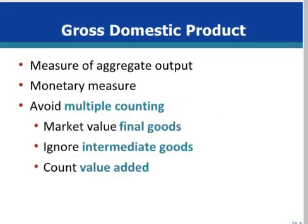The primary measure of the economy's performance as a whole is its aggregate output. This is most commonly calculated as gross domestic product, or GDP. GDP is a monetary measure in that everything is valued in dollars. All goods and services produced must be converted into dollar values for GDP to work.